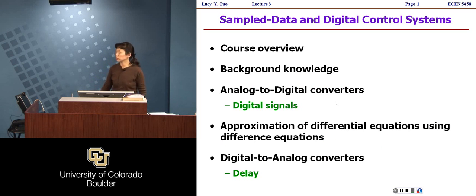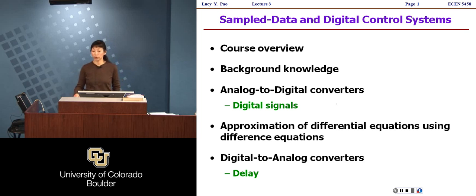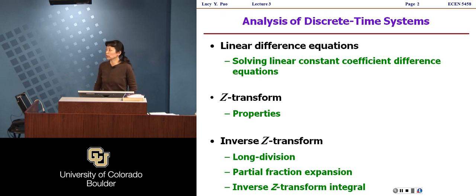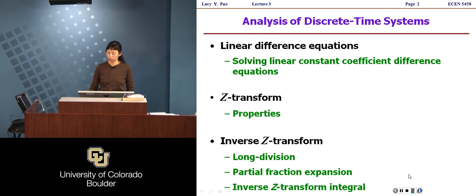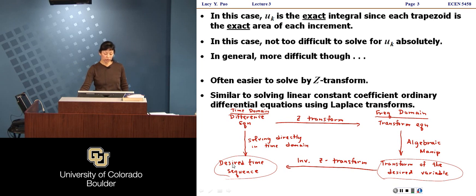Last week we overviewed the course. We talked about A-to-D converters and D-to-A converters — in particular, for D-to-A converters, the way they're typically implemented with a zero-order hold. They impart a delay of approximately half a sample period to the loop. In general, when you have a delay in the loop, it makes the system harder to control. That's one of the biggest challenges for designing discrete-time controllers. We also talked about linear difference equations and how to solve them. For higher-order difference equations, the easiest way to solve them is to use the Z transform — go from the difference equation, take the Z transform, get a transform equation, do algebraic manipulations to isolate the transform of the variable of interest, and then compute an inverse Z transform to get the desired time sequence.